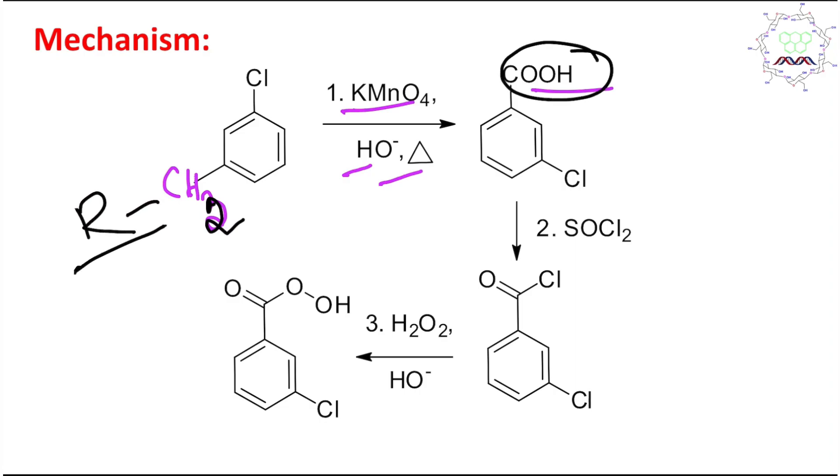This part is called benzoic acid. Now in the next step, thionyl chloride. This thionyl chloride actually helps to convert the carboxylic acid into corresponding acid chloride.